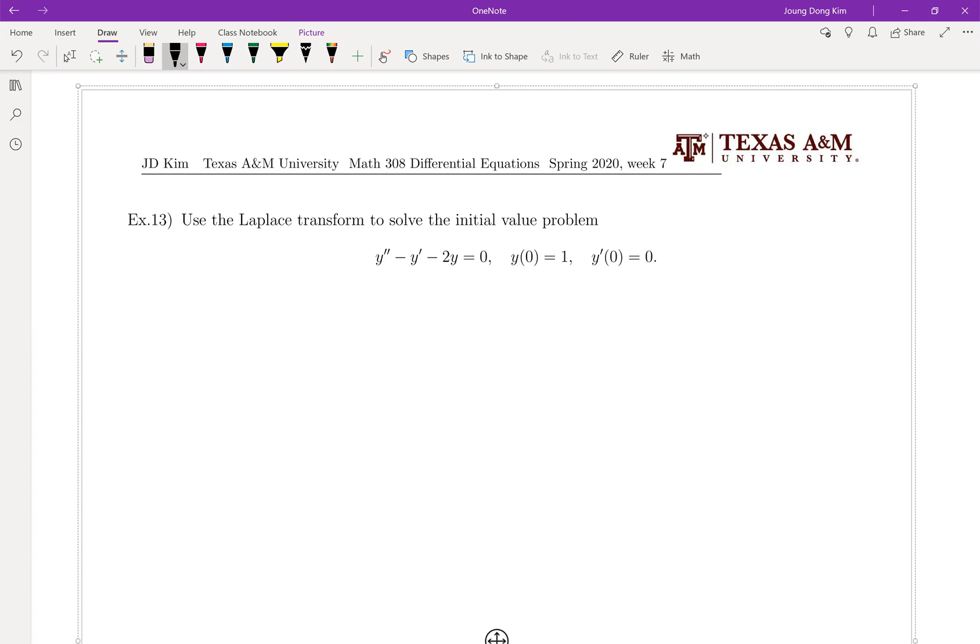I mean solution curve with a characteristic method. But you can double check with that. Let me show you how we can find this one by the method in chapter 3. Characteristic r squared minus r minus 2 equals 0.